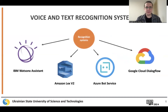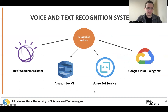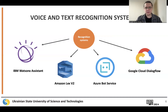The listed systems are commercial text and voice recognition platforms that share similar infrastructures and approaches: IBM Watson Assistant, Amazon Lex Version 2, Azure Bot Service, and Google Cloud Dialogflow. Each platform offers unique features and strengths catering to different technical requirements and preferences. The choice has fallen on Amazon Lex.